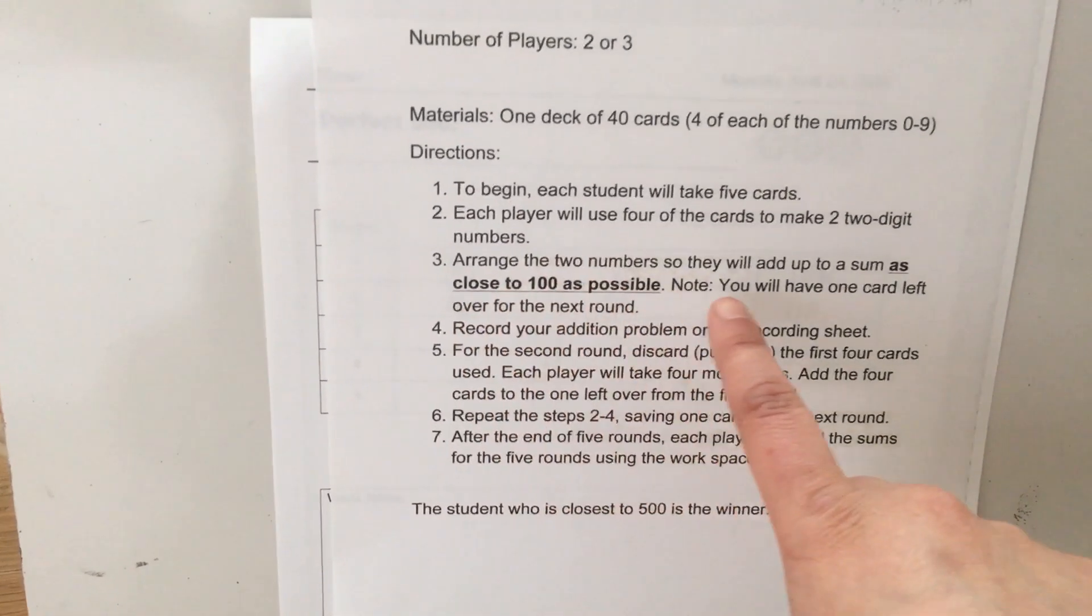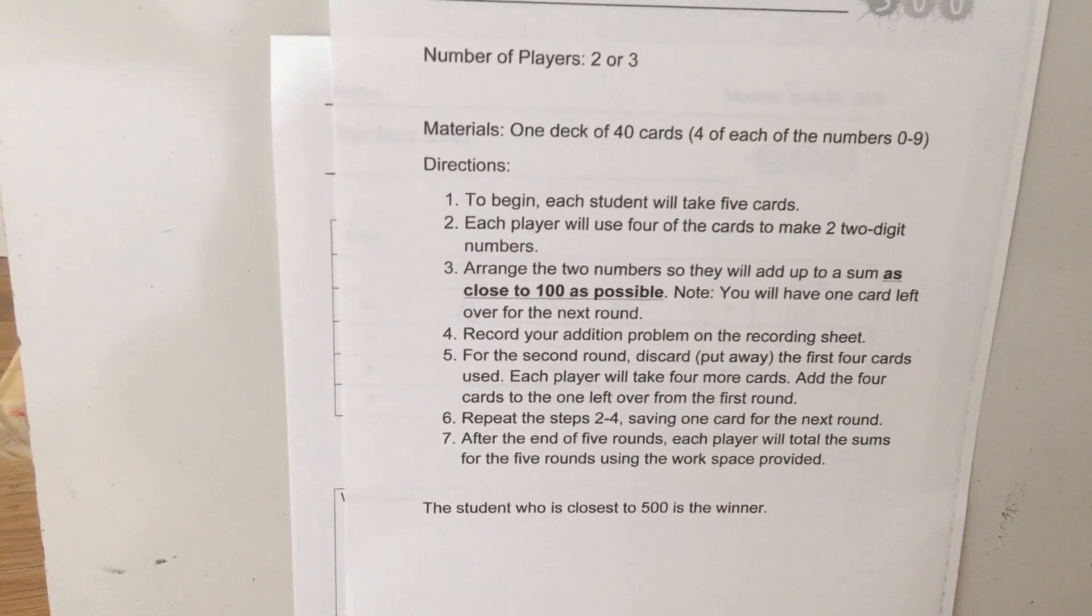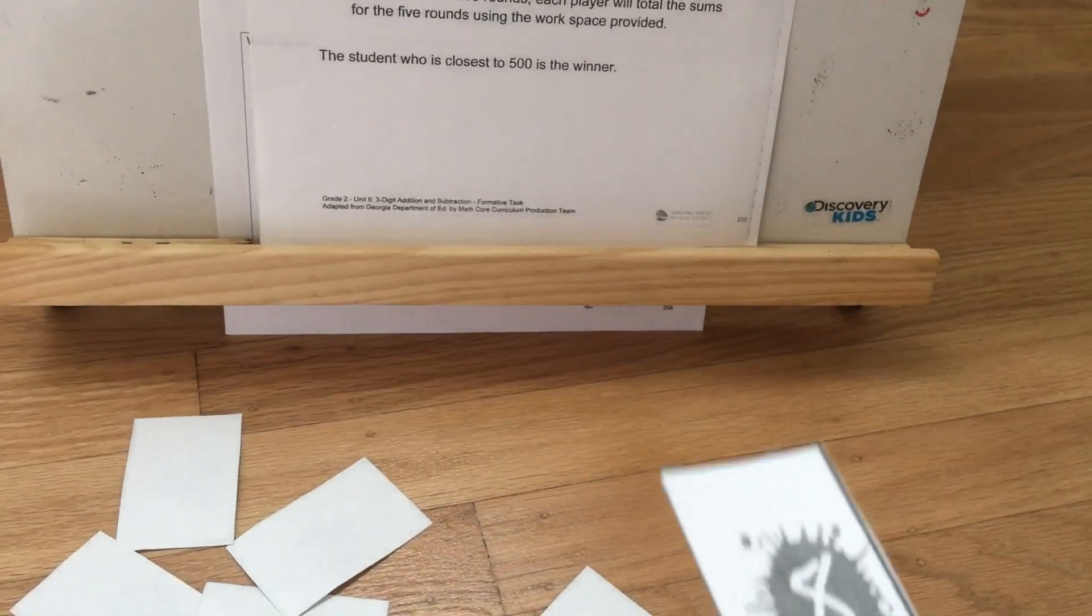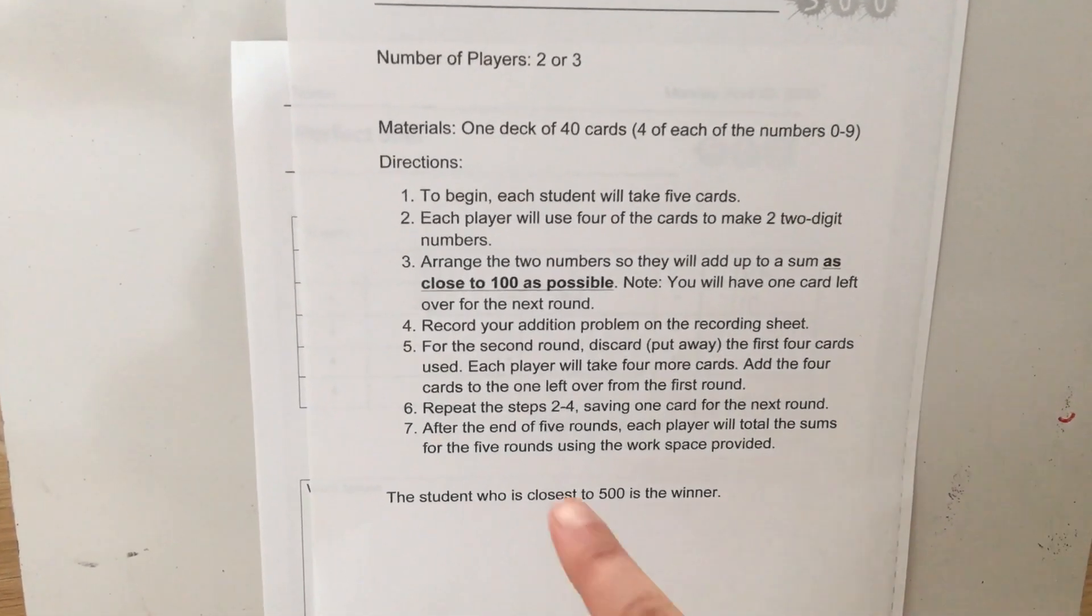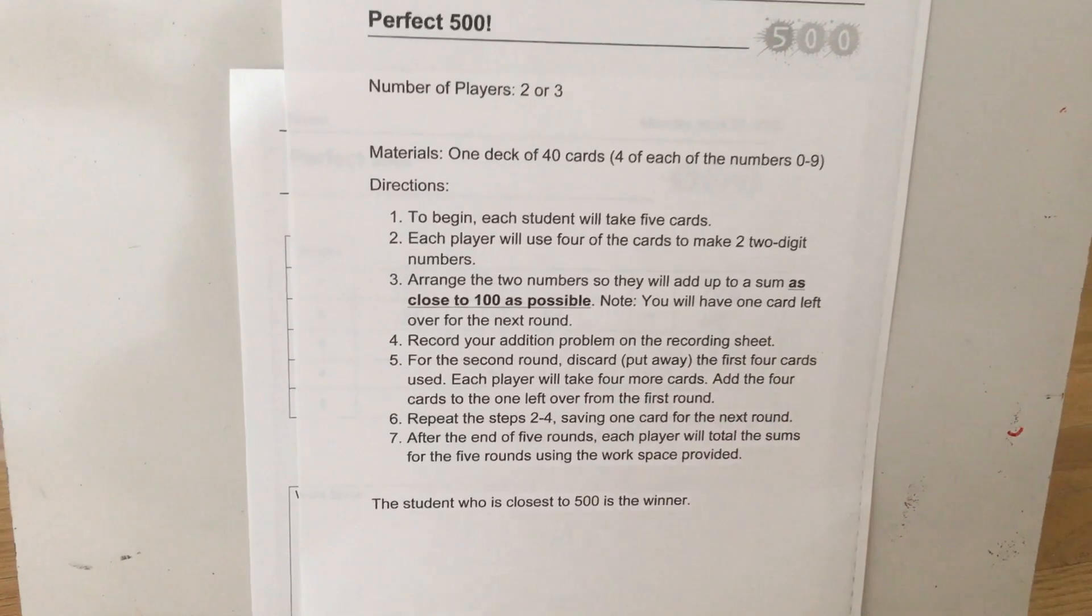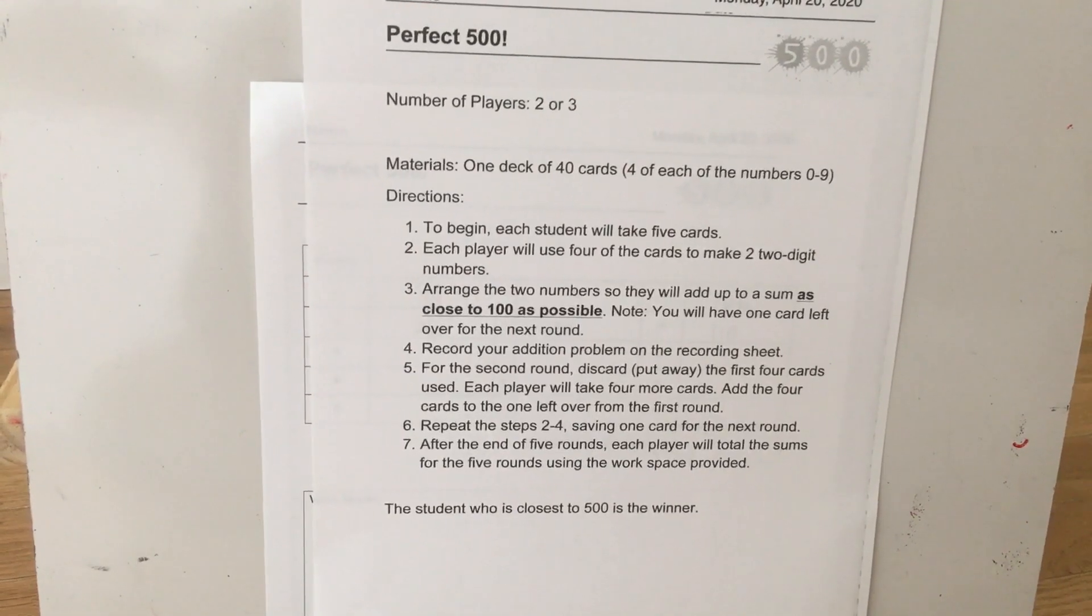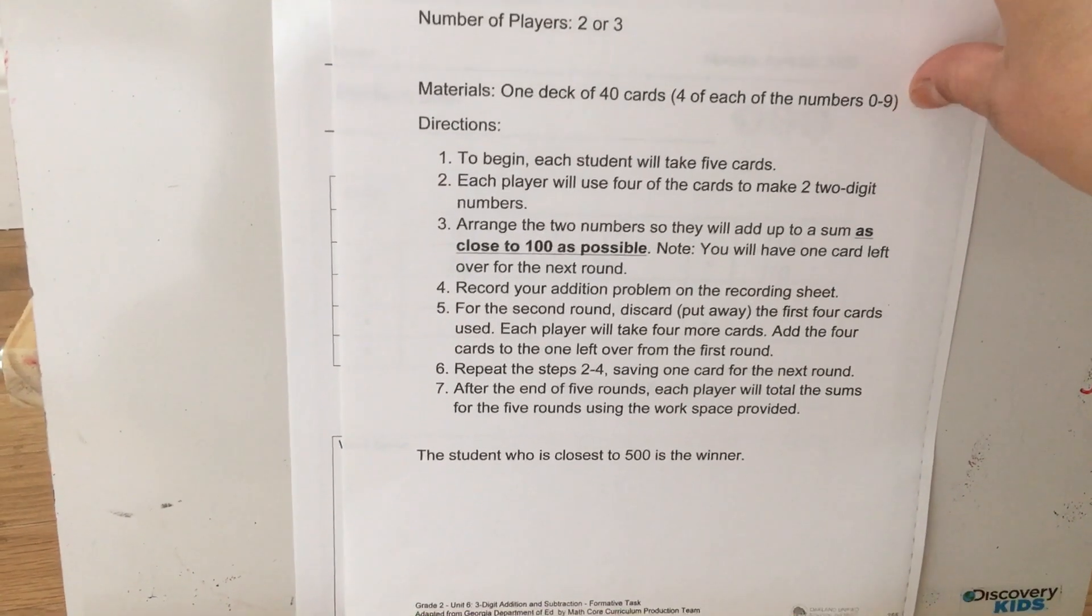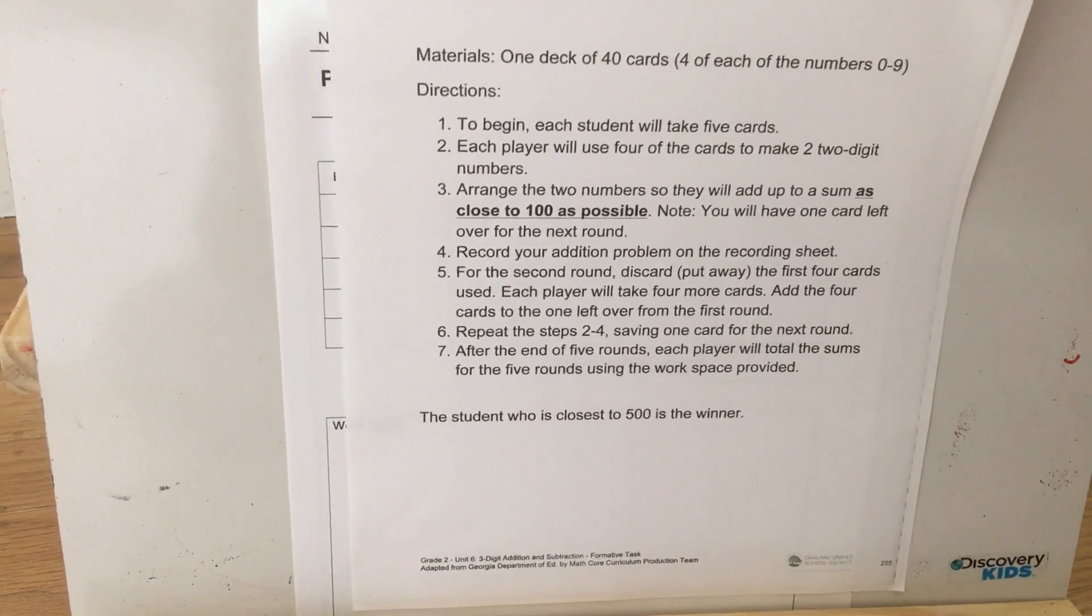Let's see. I'm going over these directions. You want to arrange the two numbers that they add up to a sum as close to 100 as possible. You're going to have one left over for the next round. Remember how I had one card with an eight left over in the first round. I saved that one and then I pulled four more cards. By the very end, you're going to have the perfect amount. You won't have anything left over. For the second round, you discard the first four cards that you use. And then you get four more cards.